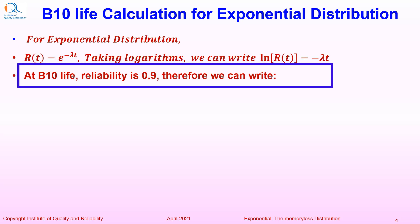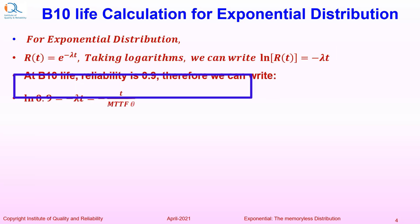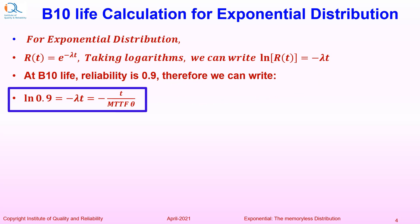At B10 life, reliability is 0.9 and therefore we can write ln of 0.9 equals minus lambda t, which can be easily written as minus t upon MTTF theta as theta is equal to reciprocal of lambda.